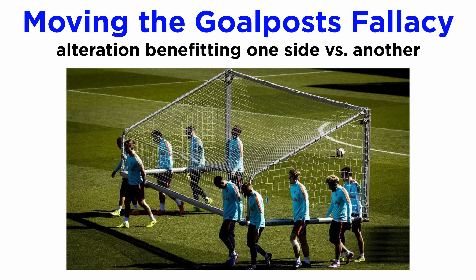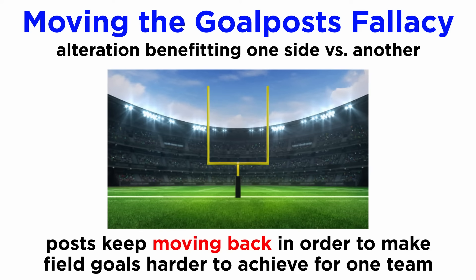This is also related to the moving the goalpost fallacy, very common in internet discourse, where, as the name suggests, the objective of the discussion is always altered to benefit one's argument in detriment of another, as if the goalposts were always changing around in a football match in order to invalidate the field goals of the opposing team, or making them more difficult to achieve.